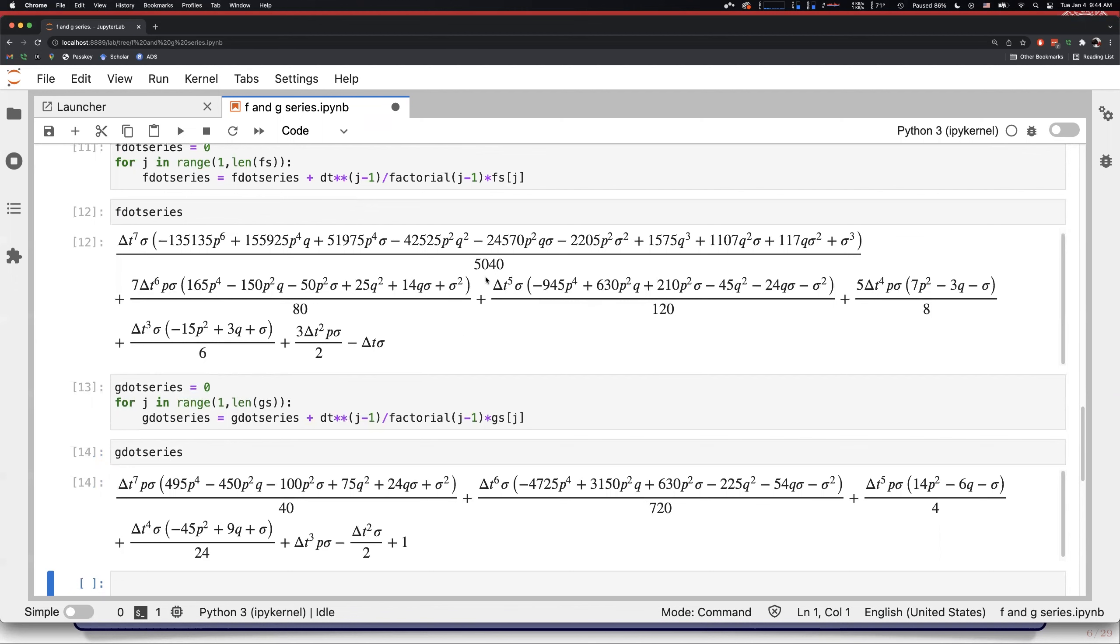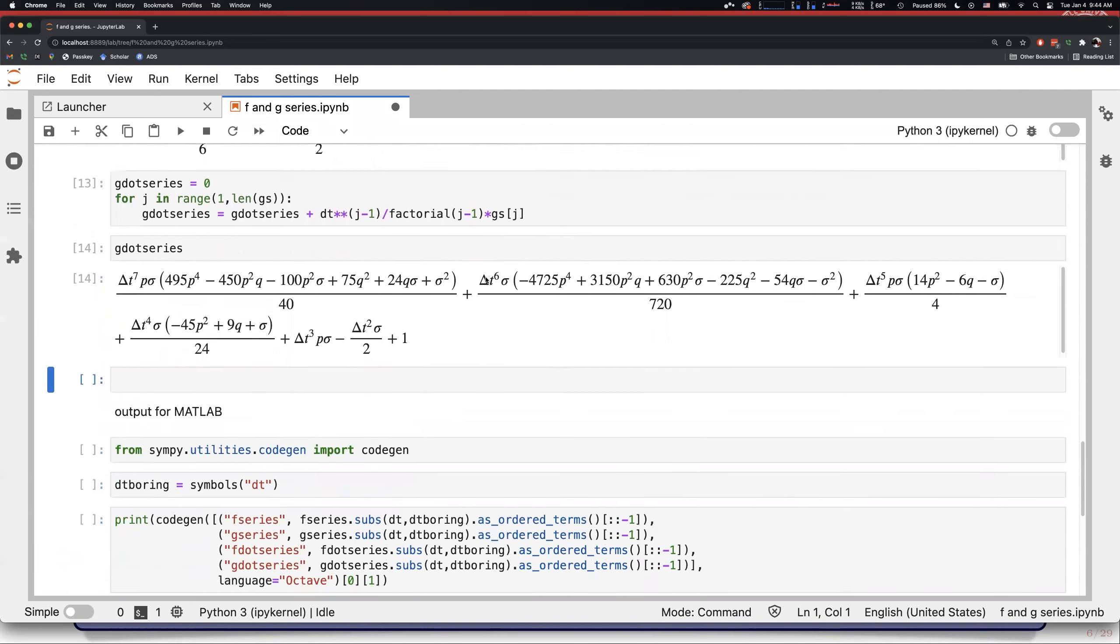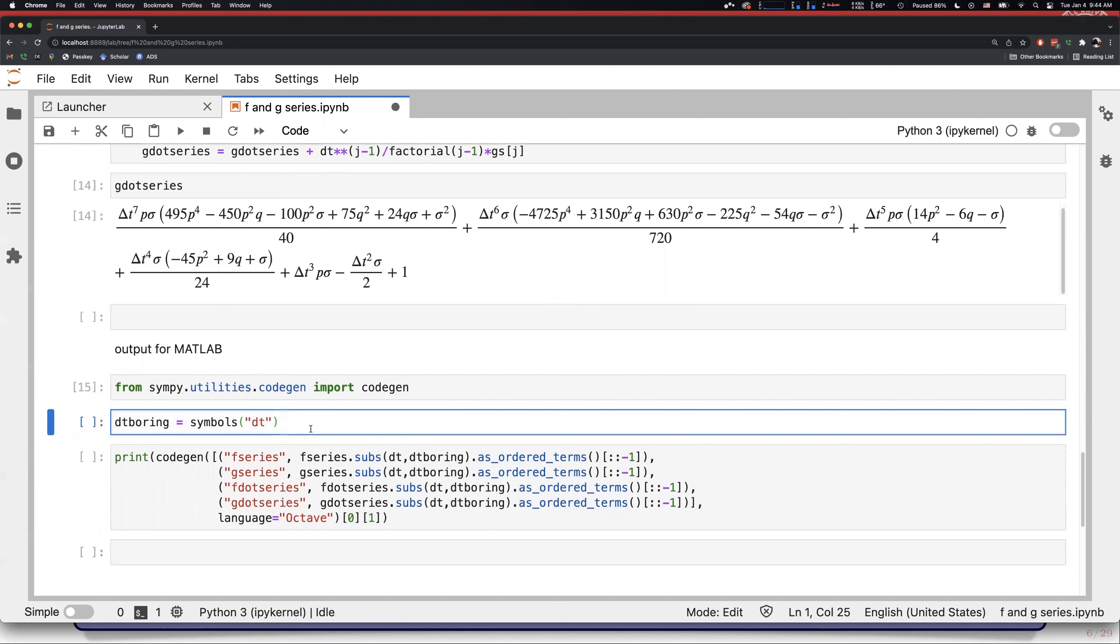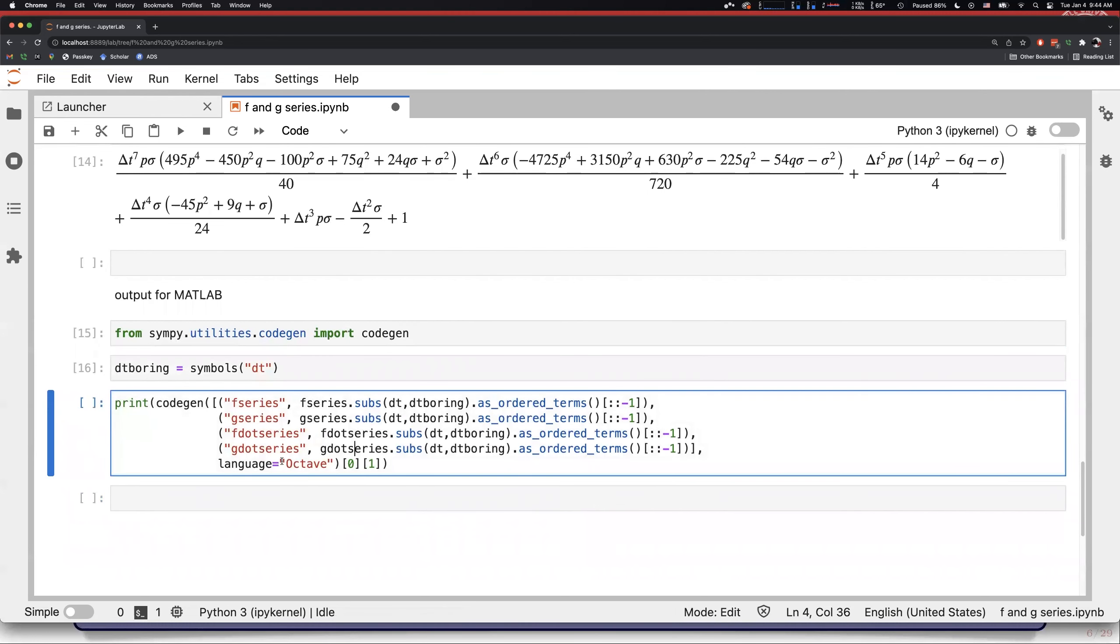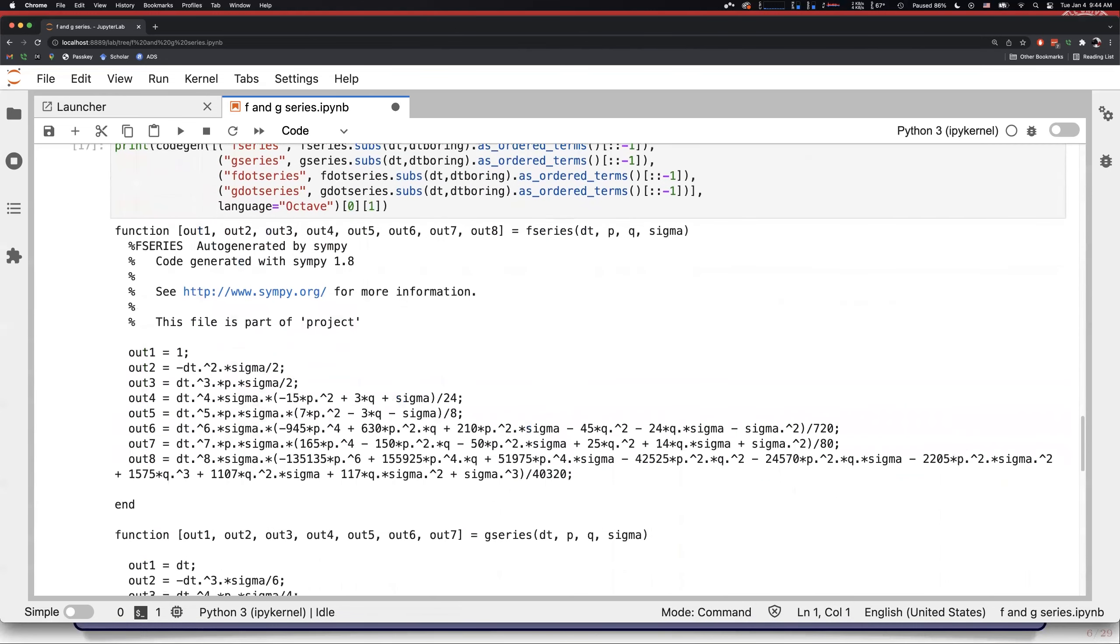So, just as an example, let's say you wanted to use this in MATLAB. We can use SymPy's code gen utility. And there's many, many smart utilities, regardless of what language you happen to be operating in. We will replace our beautiful delta t with just the boring dt. And then we will print out our code in Octave, which is the open source version of MATLAB. But it's fully compatible with MATLAB. And there you go.